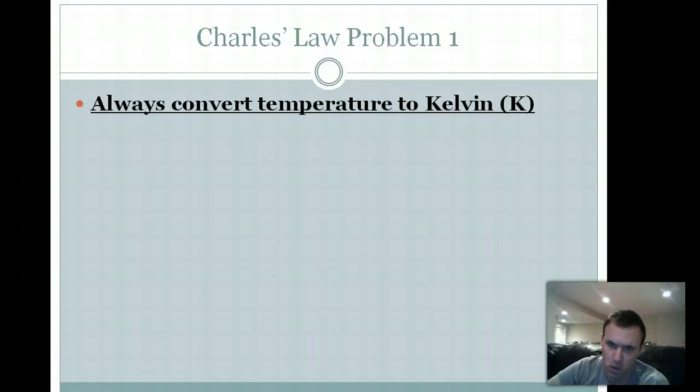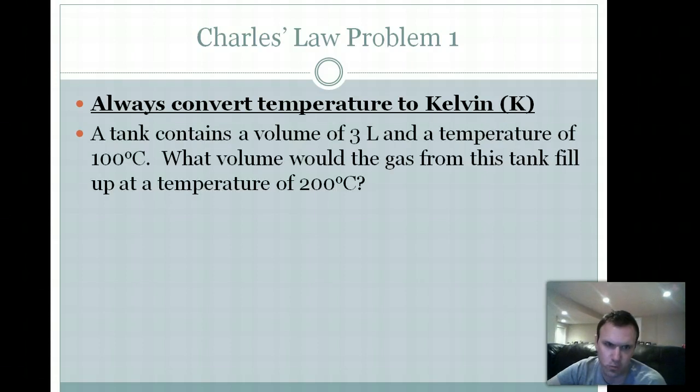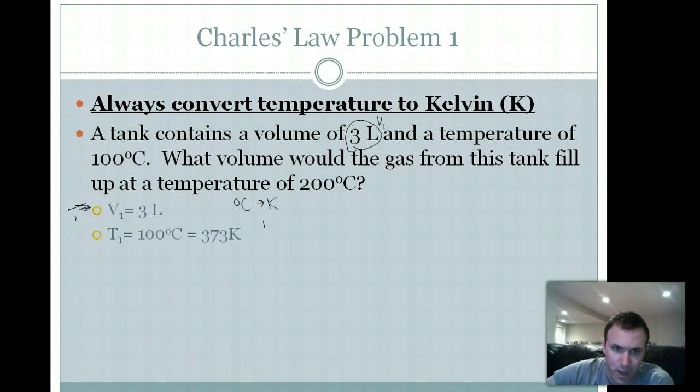The main thing that you have to remember with Charles' law is that your temperatures have to be in Kelvin. If they're not, then you need to get them there, and I'll show you how to do that here with this question. A tank contains a volume of 3 liters, so there's our first volume. And a temperature of 100 degrees Celsius. Now, at the top of this page, it says you have to convert that to Kelvin. Well, that's a very easy conversion to do. Getting Celsius to Kelvin, degrees Celsius to Kelvin, all you do is you add 273. So you see here, 100 degrees Celsius is just 373 Kelvin.